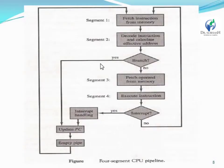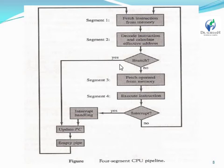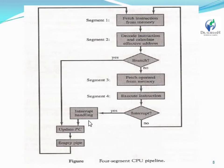What is the segment memory? This is the flowchart. Fetch any instruction from memory, then decode the instruction and calculate the effective address. If it is a branch instruction — yes — then one problem is encountered. Update the program counter and empty the pipeline, then follow the direct path. If branch instruction is no, then fetch the operand and execute. Check if an interrupt is occupied — if yes, then interrupt handling program is applied; if no, then the process is completed directly.